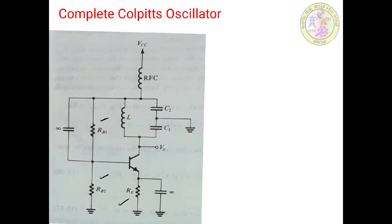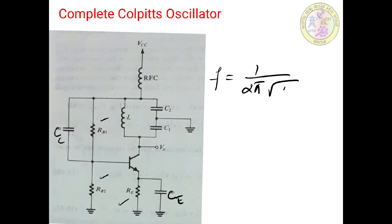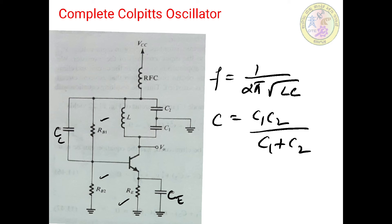CE and CC can be represented as the coupling capacitor. Therefore, the frequency of oscillation is given by f = 1/(2π√(LC)), where C = C1C2/(C1+C2). This is the Colpitts circuit using BJT with a complete biasing arrangement.